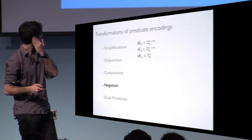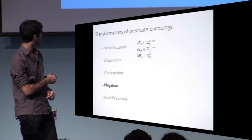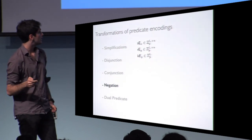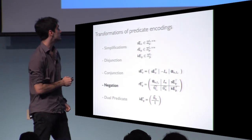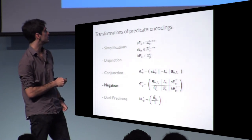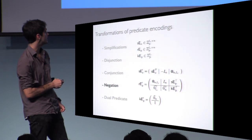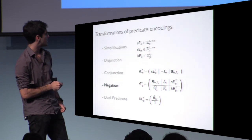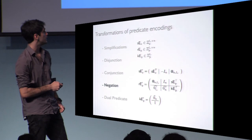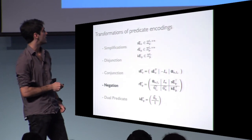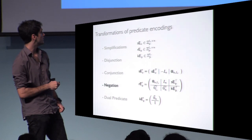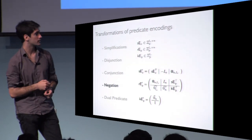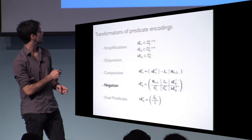To give an intuition about how these transformations work, I will describe our negation construction. Starting from three matrices, we build negation by creating new matrices as blocks. For example, the new SE matrix is the original SE transposed, with a block of minus the identity and a block of zeros. Similarly we build the other two matrices. Thanks to our algebraic characterization we can show this is indeed a valid predicate encoding for the negated predicate.